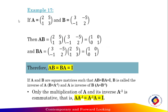Let's see Example 17. Given that matrix A equals [2, 5; 1, 3] and matrix B equals [3, -5; -1, 2], when matrix A is multiplied by B you get the 2 by 2 identity matrix, and when B is multiplied by A you also get the identity matrix. Therefore, A times B equals B times A equals the identity matrix. If A and B are square matrices such that AB equals BA equals identity, then B is called the inverse of A, so B equals A inverse and A equals B inverse.